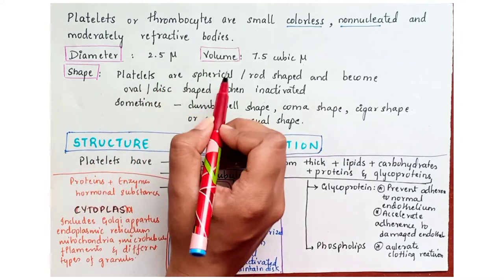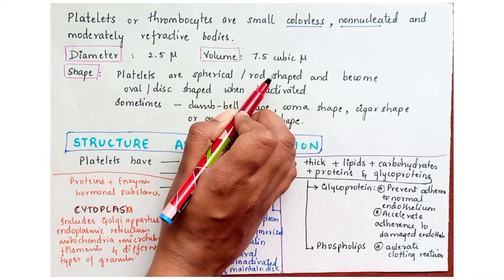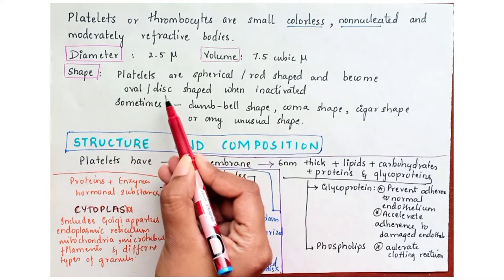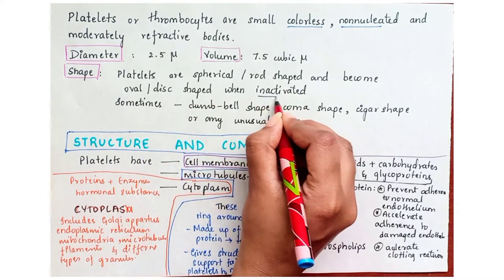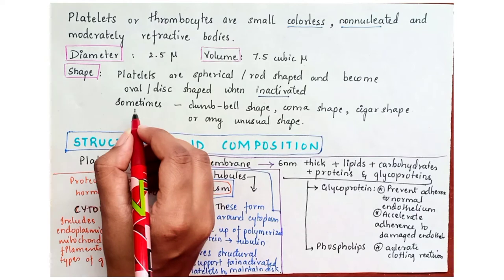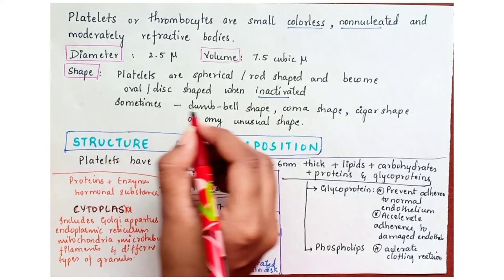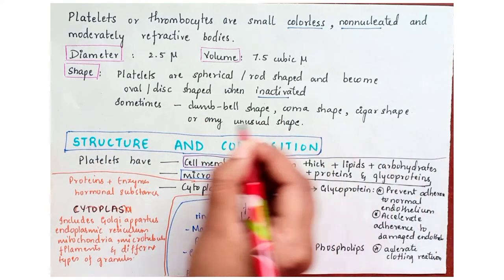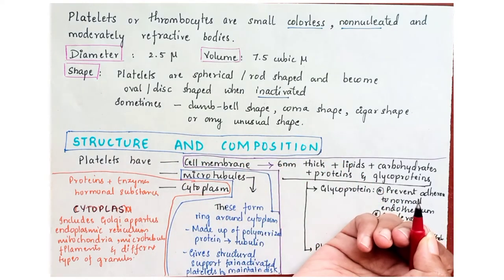Platelets are spherical or rod shaped and they become oval or disc shaped when inactivated. Sometimes they even appear as dumbbell shape, comma shape, cigar shape or any unusual shape.